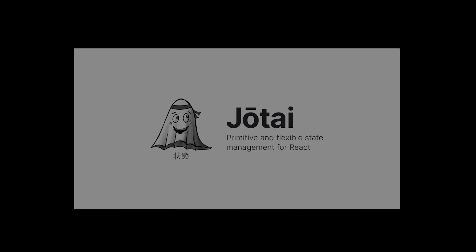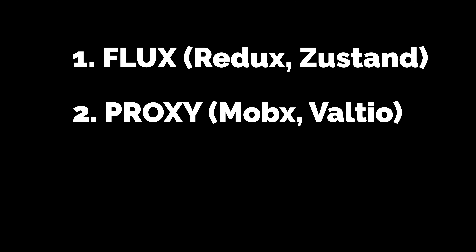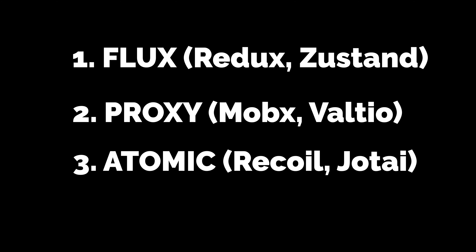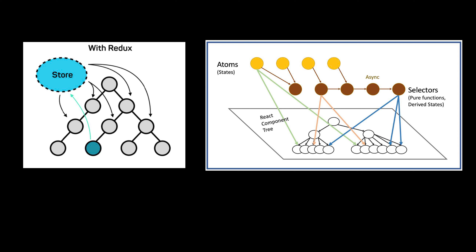To get an idea of what Jotai does, we have to first understand where it places among other state management libraries and what it does differently. A developer has attempted to categorize the libraries into three different types: flux, proxy, and atomic. Atomic is the category that Jotai fits in. Unlike the others, where it stores the state outside the React tree, the atomic type stores state internally inside the tree.